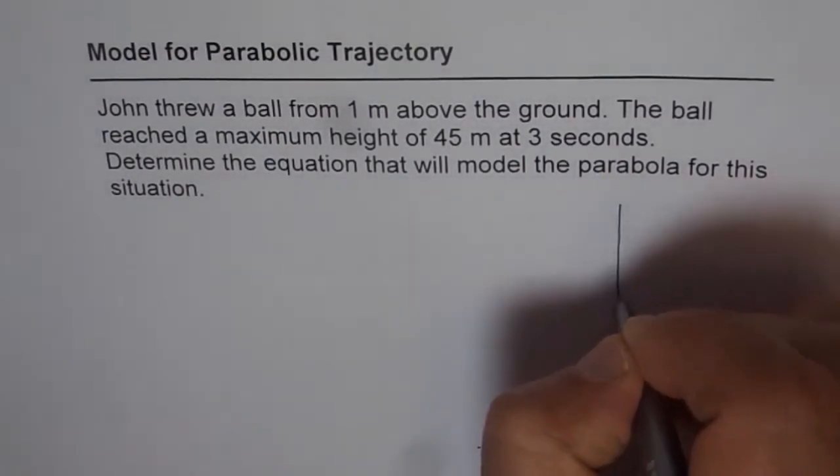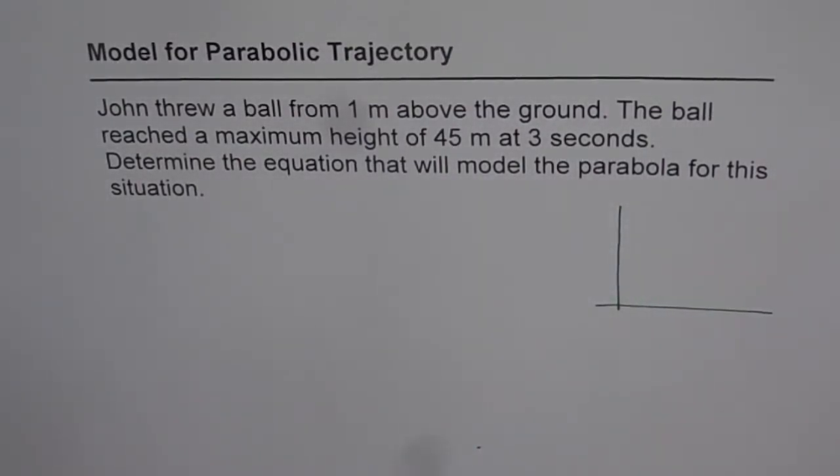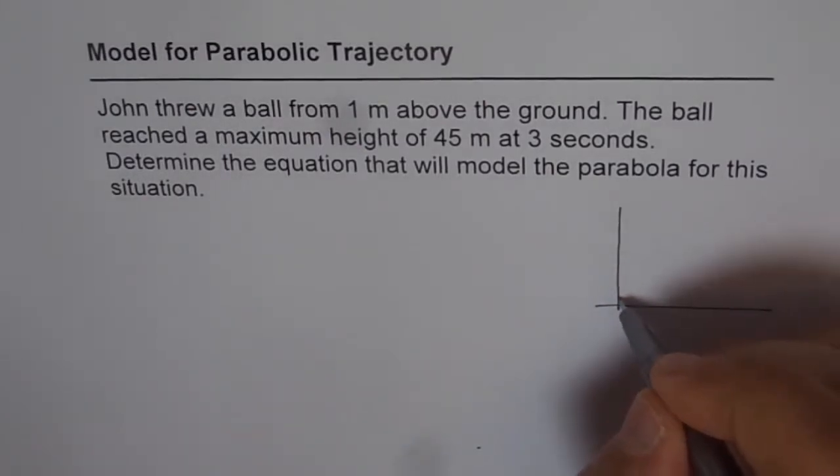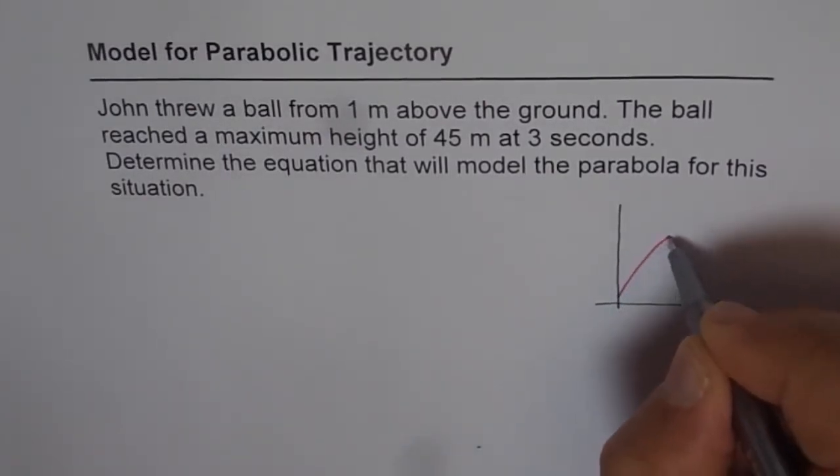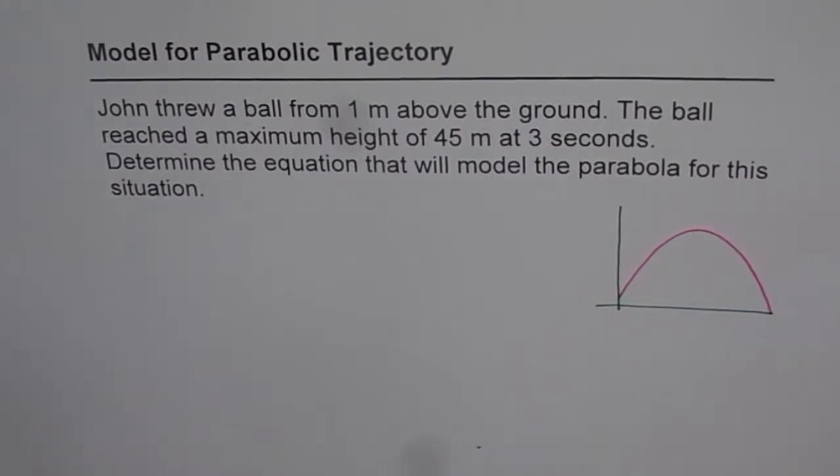Let's first sketch the graph here. So let's say that John throws the ball from one meter height and goes like this and then it has to fall down ultimately, right? That's how it will go.